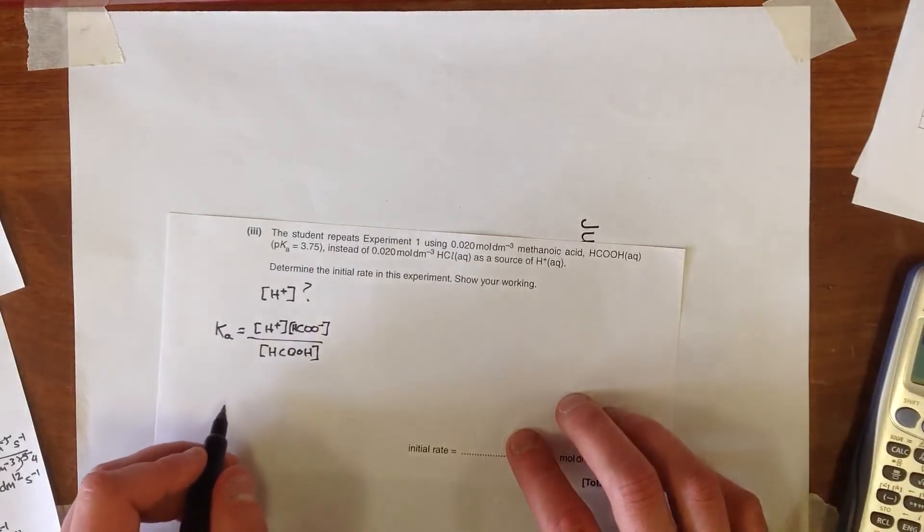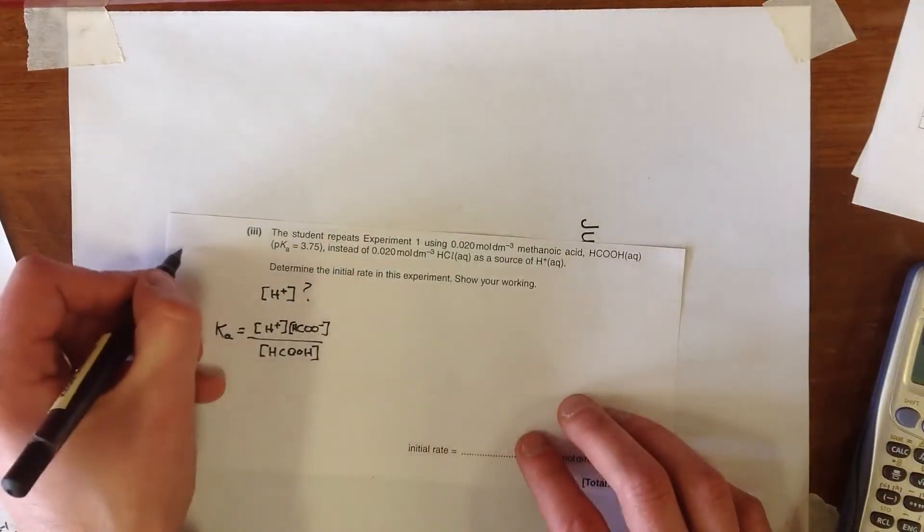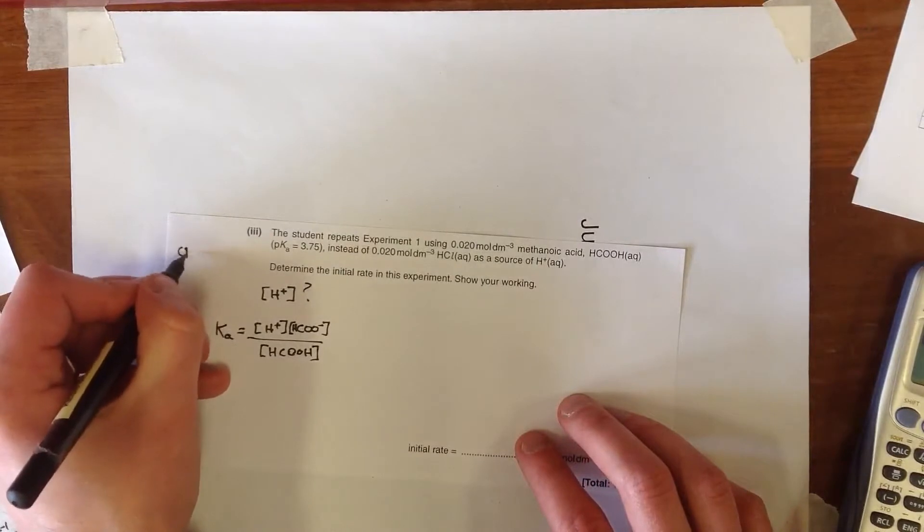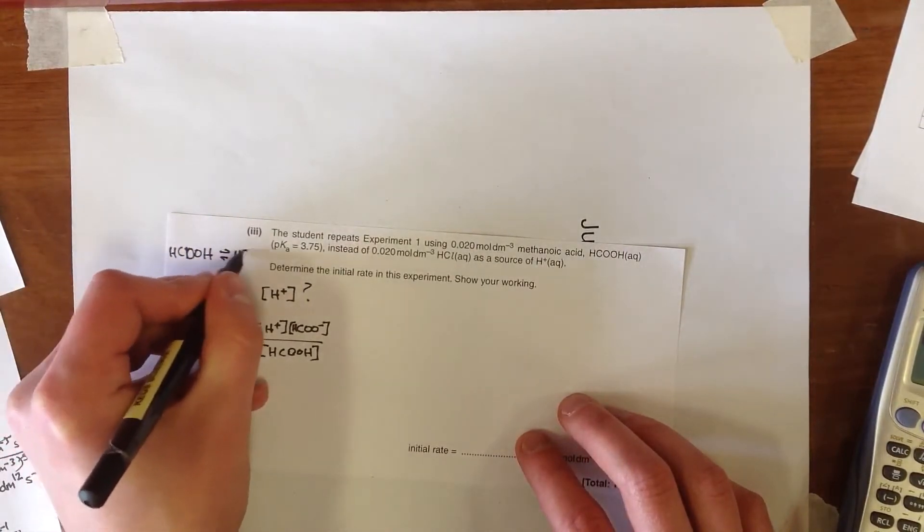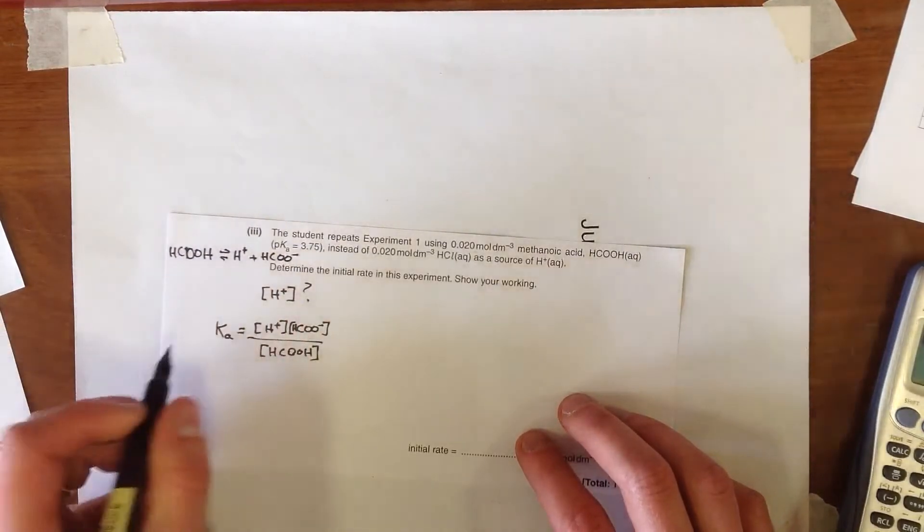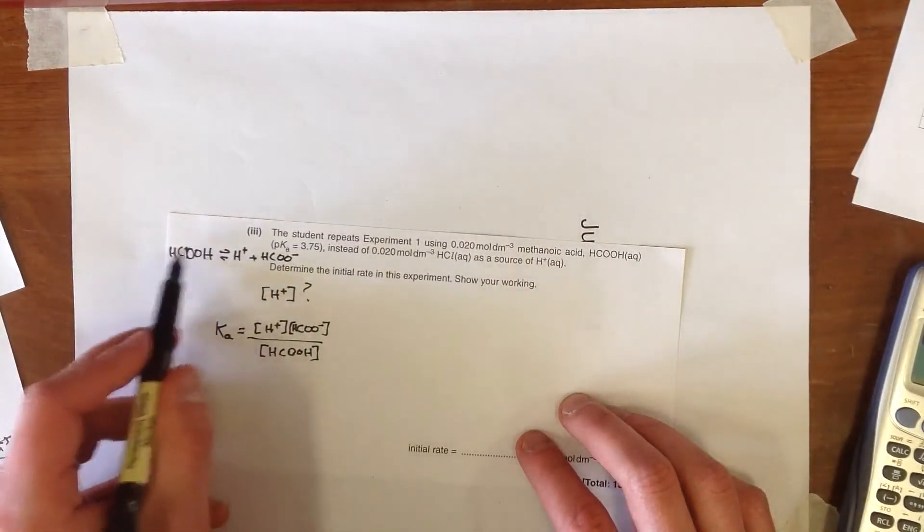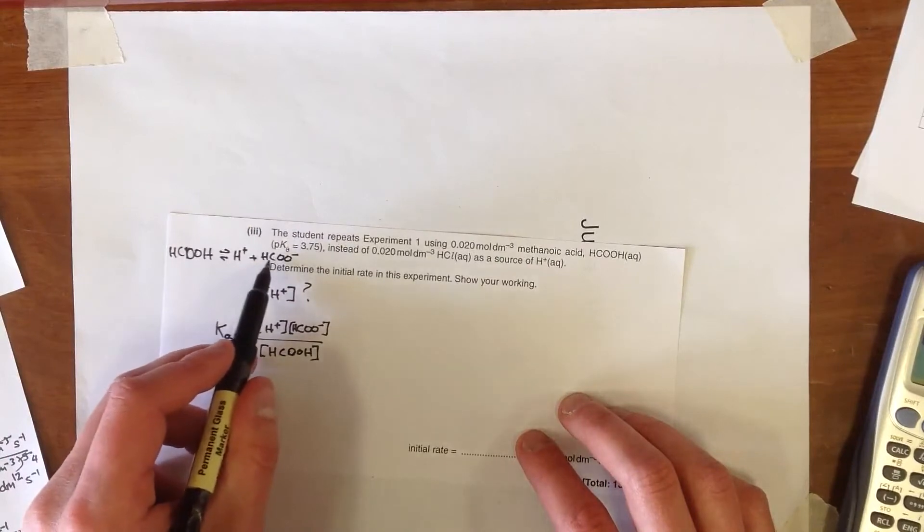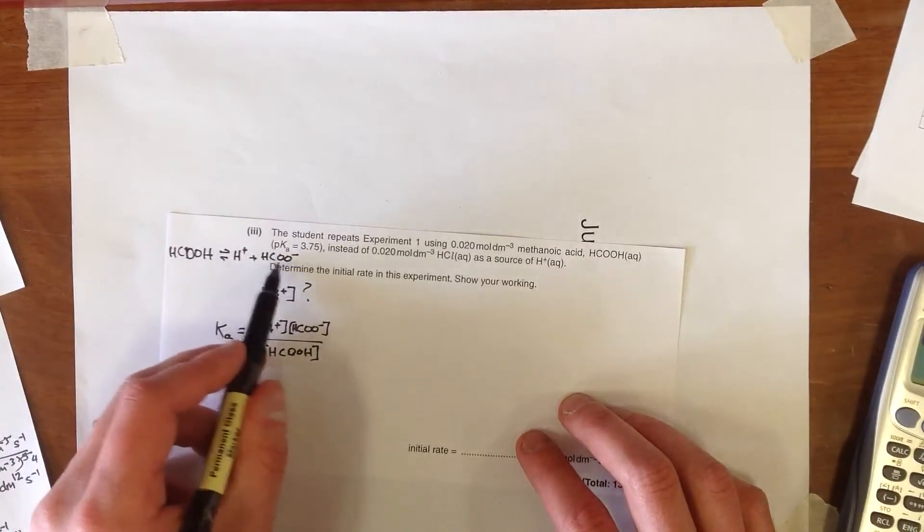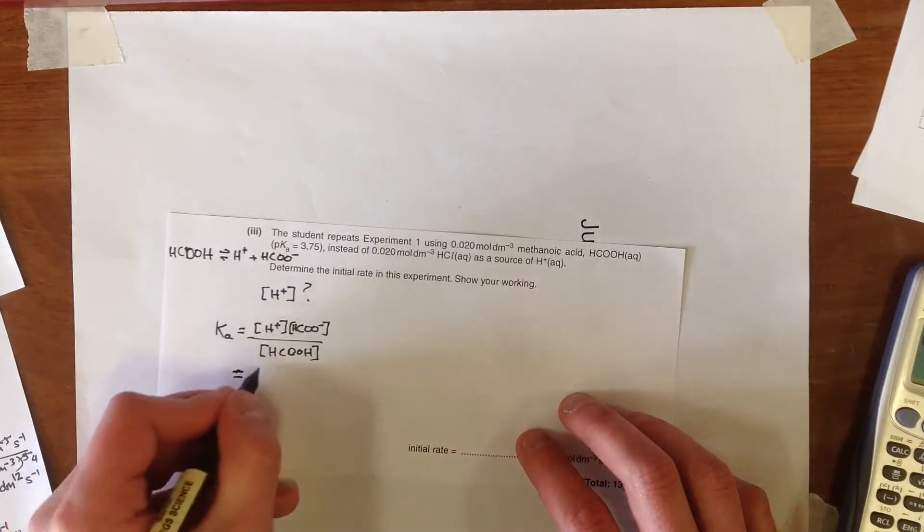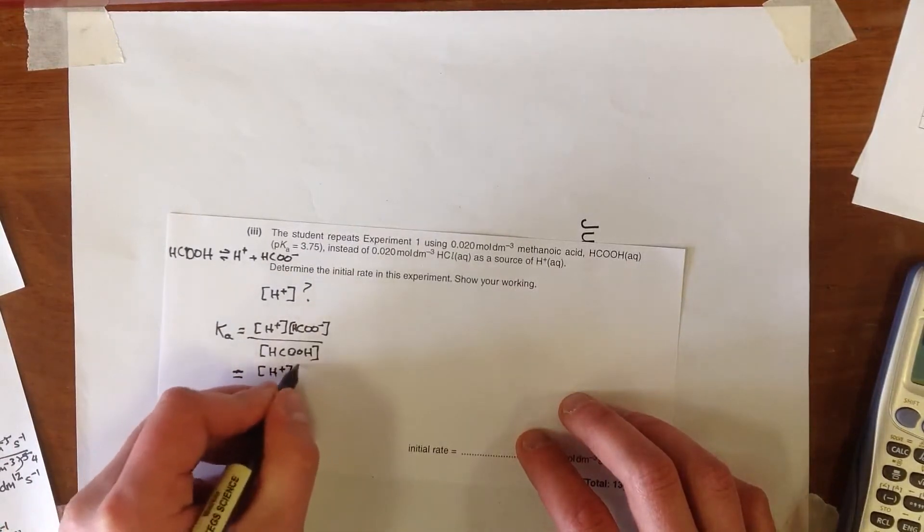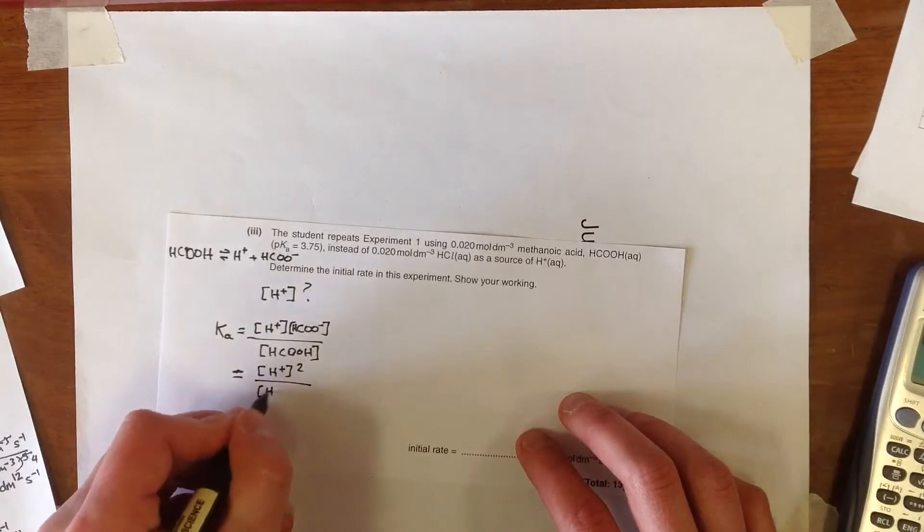Now, if we have a weak acid dissociating, according to this equation, so HCOOH dissociating to give H+, and HCOO minus, then if that's the only thing that's around, then we're going to have the equal concentration of HCOO minus as H+. And so we can write that as H plus squared over HCOOH.